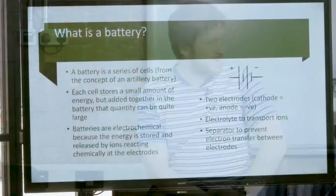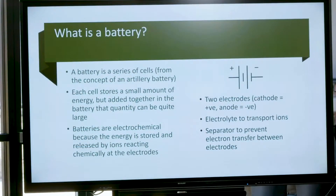Batteries are termed electrochemical devices because energy is stored and released by ions reacting chemically at the electrodes. At each electrode, the ion arrives, reacts, and releases an electron that goes around the electronic circuit. These processes are known as charging and discharging. Most batteries used day-to-day are primary batteries — non-rechargeable. The technical term for rechargeable is 'secondary battery', and these are getting all the headlines as we move towards a more wireless, electricity-driven world with ever-larger batteries.